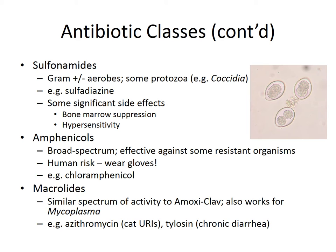Sulfonamides have some additional antimicrobial properties — they cover gram-positive and gram-negative aerobes, but also some protozoa like coccidia, and sometimes giardia. Sulfadiazine is the most common example, seen in clinics as S20, S125, or S250. Significant side effects include bone marrow suppression and hypersensitivity. Most coccidia infections resolve on their own, so we only use sulfonamides in some cases. Acute kidney failure from sulfa drugs has been seen, so we stay away from them especially in young animals.